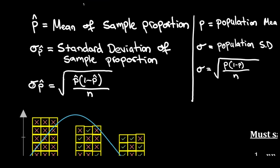Let's go to the whiteboard. What we have here is information about samples and populations — a population standard deviation and a sample deviation, along with some notation. When we see a hat on top of the P, it's just implying that it is a sample proportion rather than a population proportion.